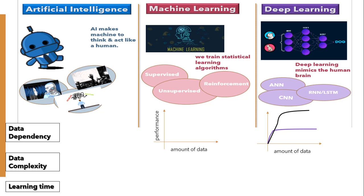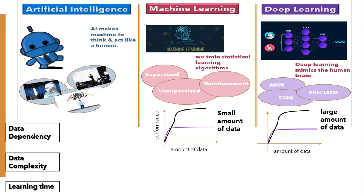If you have a small amount of data, you can see that the machine learning curve rises in comparison to deep learning. But as we increase the amount of data, the machine learning curve starts decreasing relative to deep learning. So we can say that with a lesser amount of data, machine learning works well but fails as the amount of data starts increasing. With huge amounts of data, deep learning algorithms work tremendously.